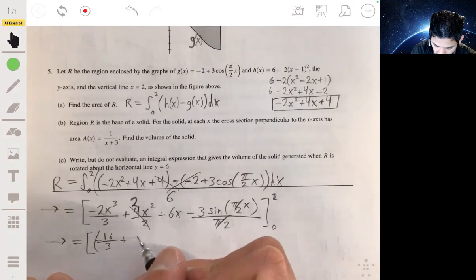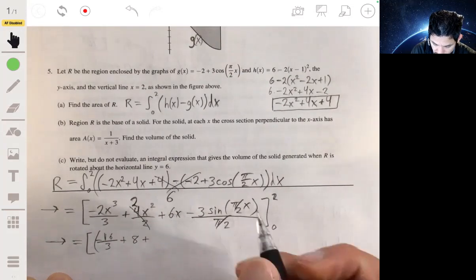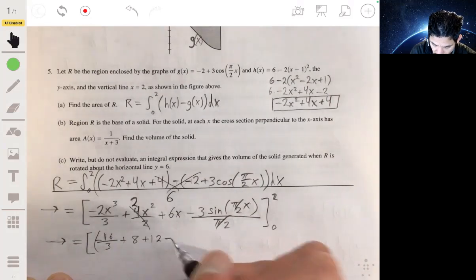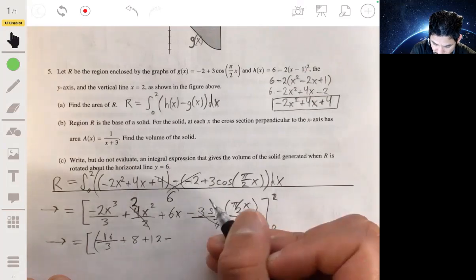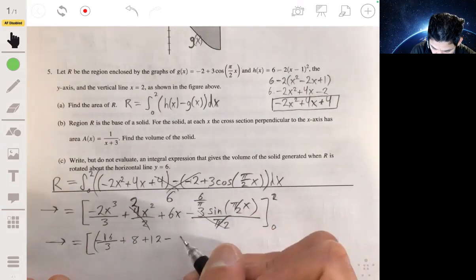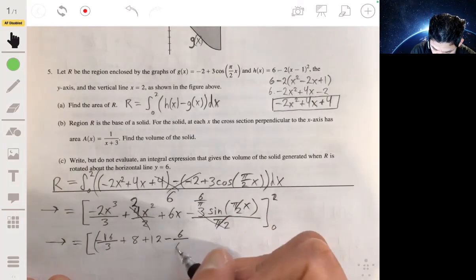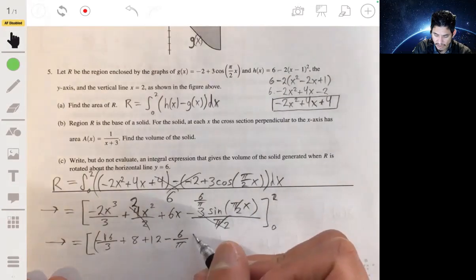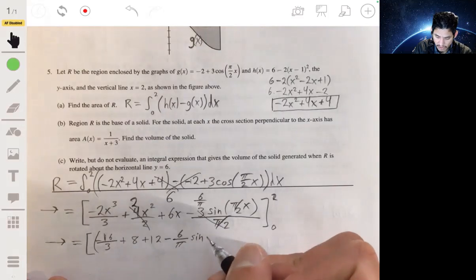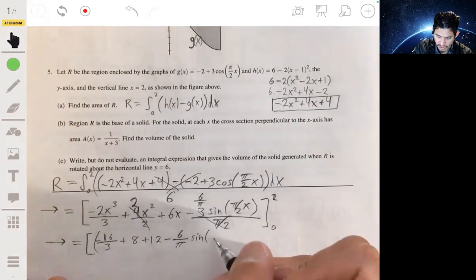2 times 2 squared, so plus an 8, plus 6 times 2, so plus 12, minus, this becomes 6 over π, times the sine of π, because the 2 and the 2 there cancel.